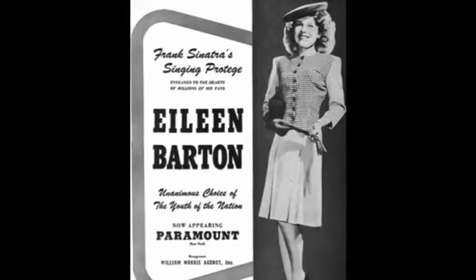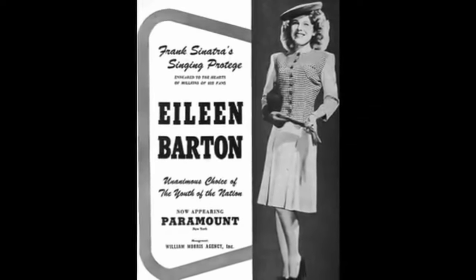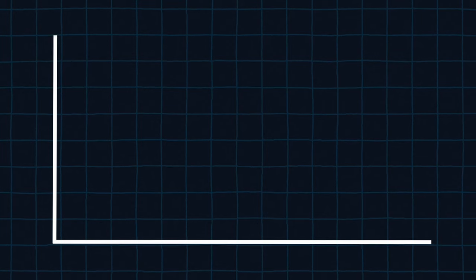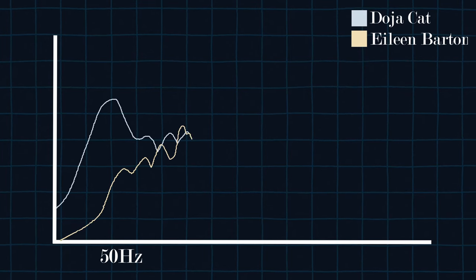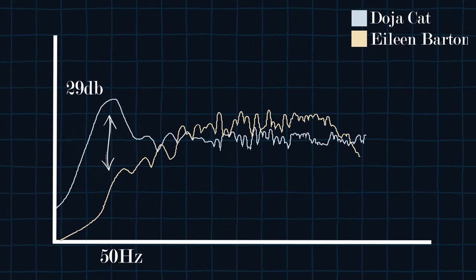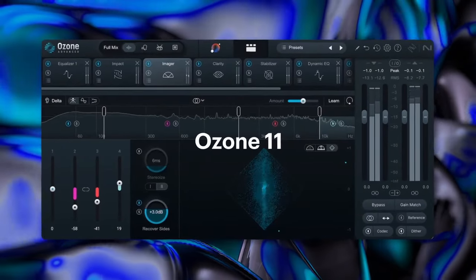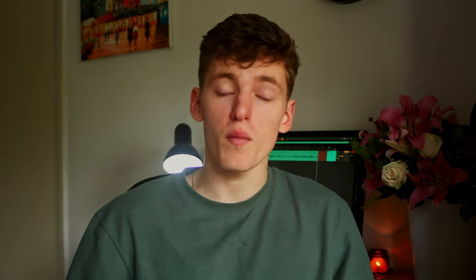If we look at one of the top songs from the 1950s and compare it with, say, Doja Cat — when we compare the EQ curves, we can see with Doja Cat there's 29 more decibels of low-end at 50Hz and 22 more decibels at 10kHz. We can also demonstrate this using Ozone's AI auto-mastering plugin, which compares your mix to a modern pop mix and changes yours accordingly.